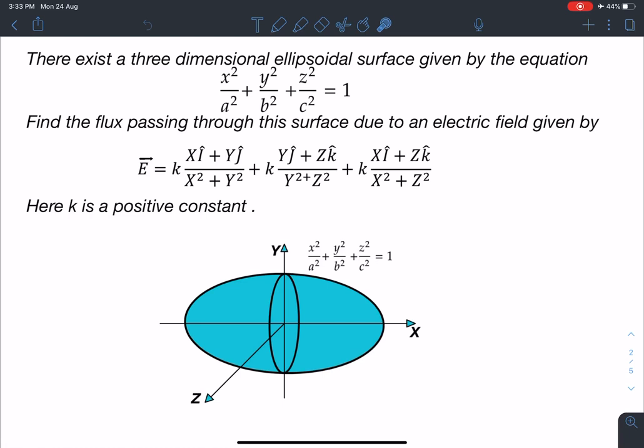Find the flux passing through this surface due to an electric field given by vector E is equal to k times xi plus yj by x square plus y square plus k times yj plus zk divided by y square plus z square plus k times xi plus zk divided by x square plus z square where k is a constant and this is the ellipsoidal surface given to us.